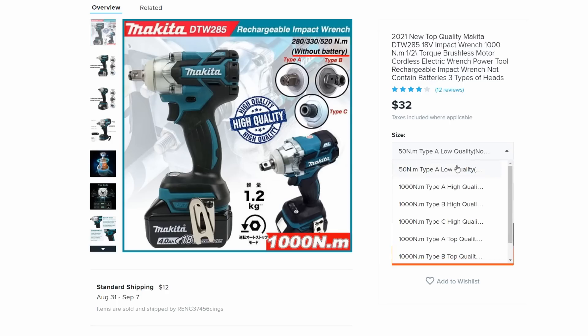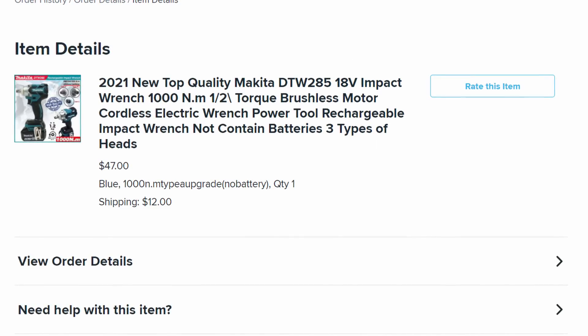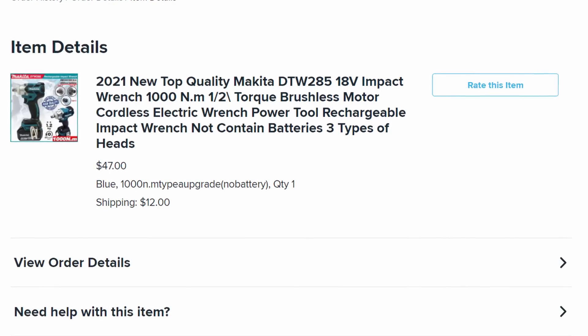They have a few options of course, but we didn't want that low or high quality, we want that 1,000 newton meter top quality, which is currently $53 plus $12 shipping, but we bought for a steal at $47 or $59 total. 1,000 newton meters equals 738 foot-pounds.